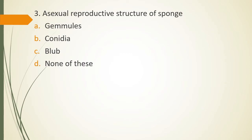Question 3, asexual reproductive structure of sponges is. Gemmules, conidia, bulb or none of these. Asexual reproductive structure in sponges is.